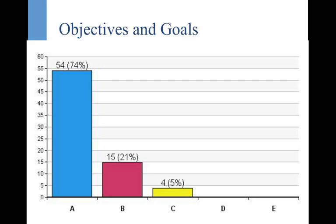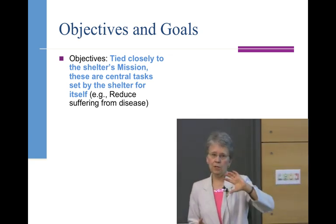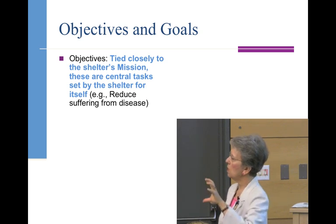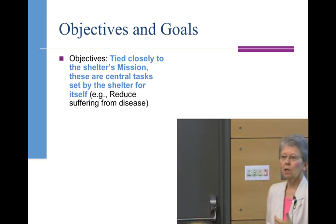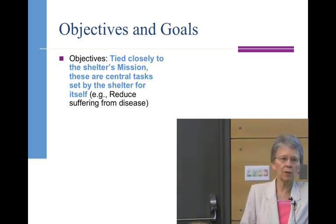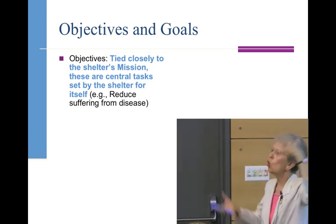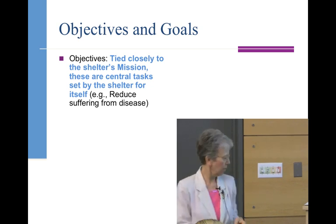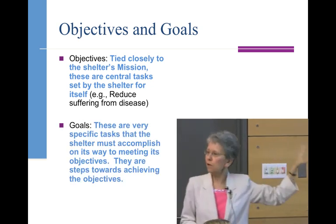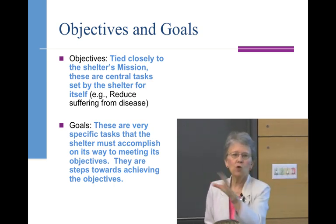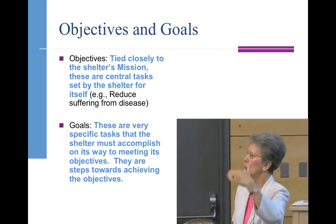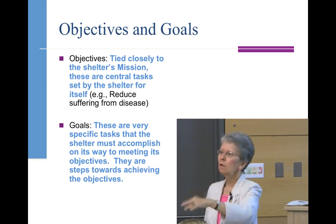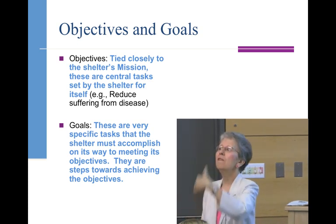I want to make a point about the difference in terminology. An objective is a broad goal that's part of your mission — like reducing suffering — something you're striving to do, very general. A goal, by their definition, is that specific thing you set. You may have multiple goals to help achieve your objective. You will define a goal, initiate it, hopefully resolve it, or if you don't, figure out why you didn't and set a new goal. It's an ongoing, repetitive process.